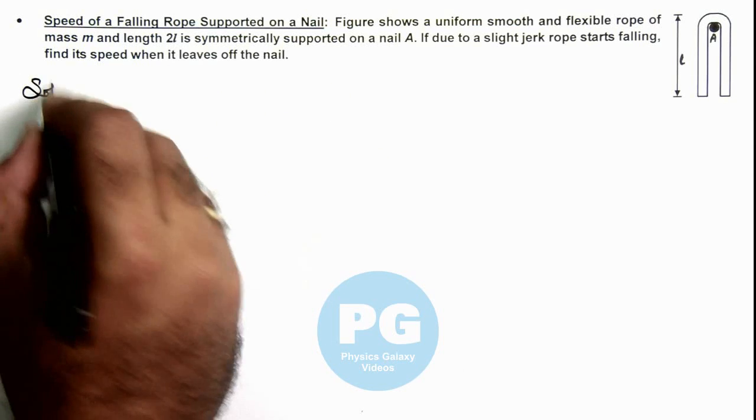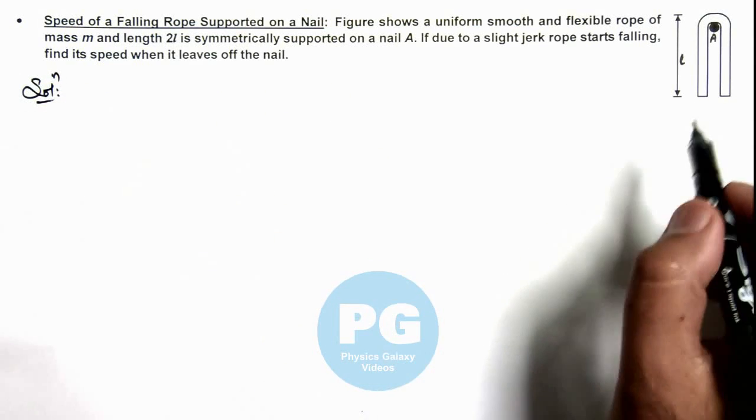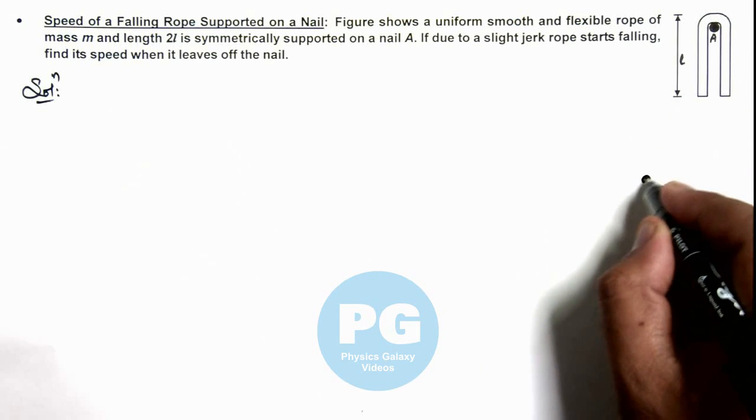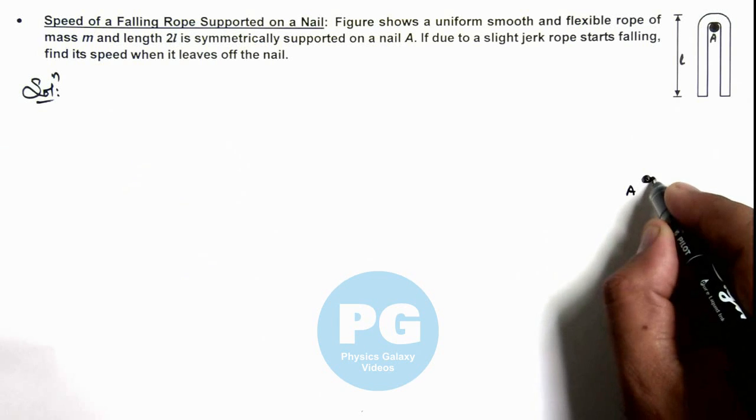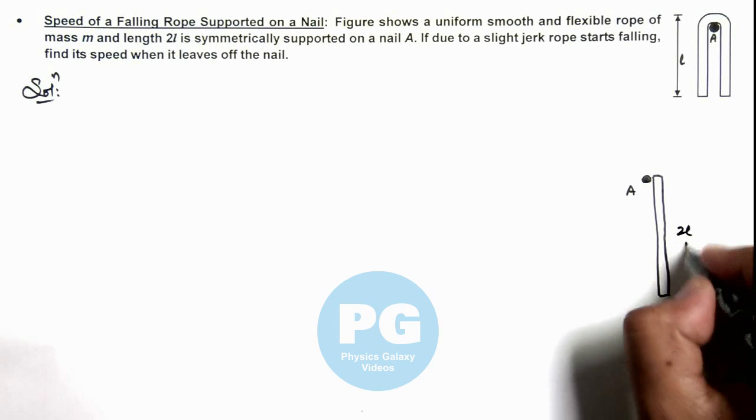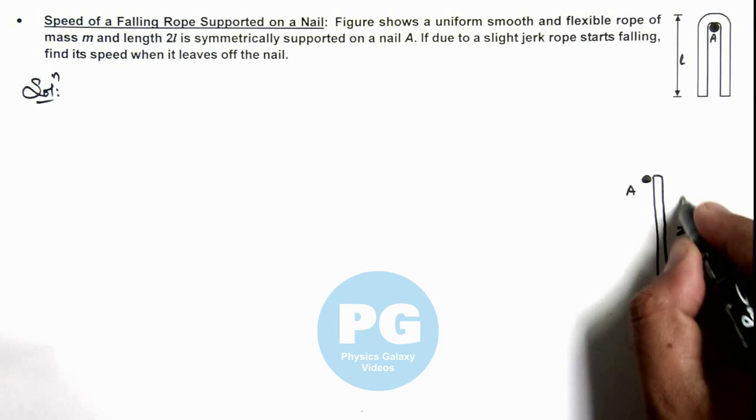In the solution, we can see if a jerk is provided on the right part and it starts falling. When the rope is moving off the nail, the situation would be that the total length 2l is on one side of the nail.